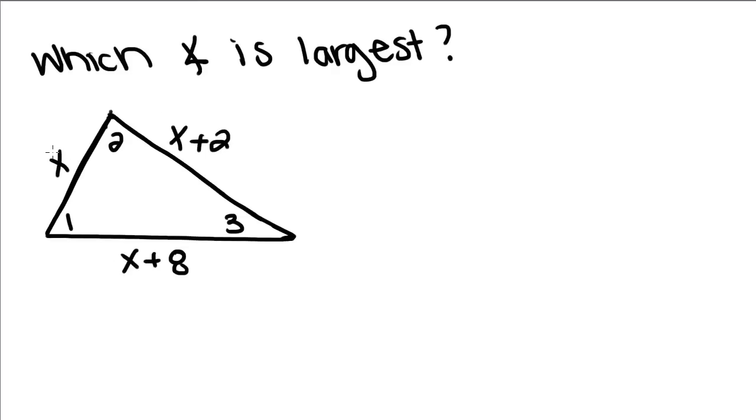So we know that the sides measure x, x plus 2, and x plus 8. If we were to order these sides from least to greatest, we would have x, x plus 2, because this x has the same value for each side. So if I just have x, that's going to be less than if I have x and 2 more than x.